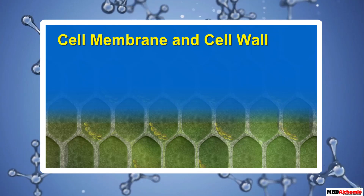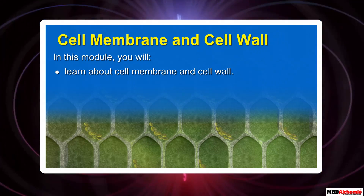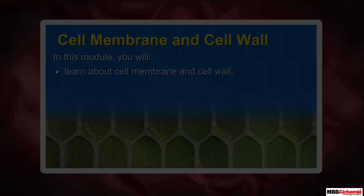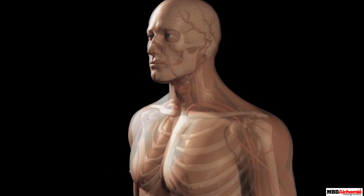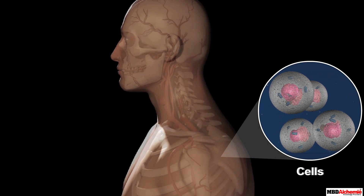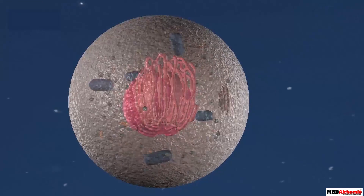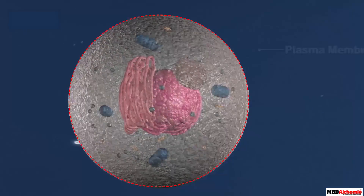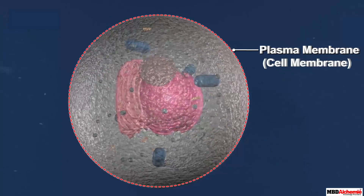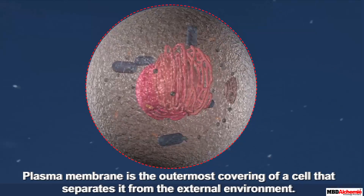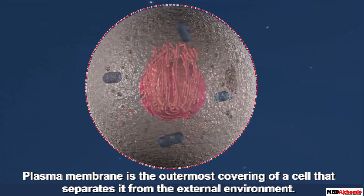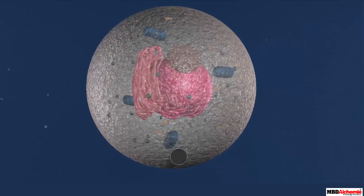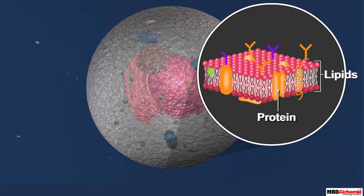In this module you will learn about cell membrane and cell wall. Living organisms are made of cells, and a cell is made of a number of parts. One such important part of a cell is the plasma membrane, or the cell membrane. The plasma membrane is the outermost covering of a cell that separates it from the external environment. It is made of lipids and proteins.